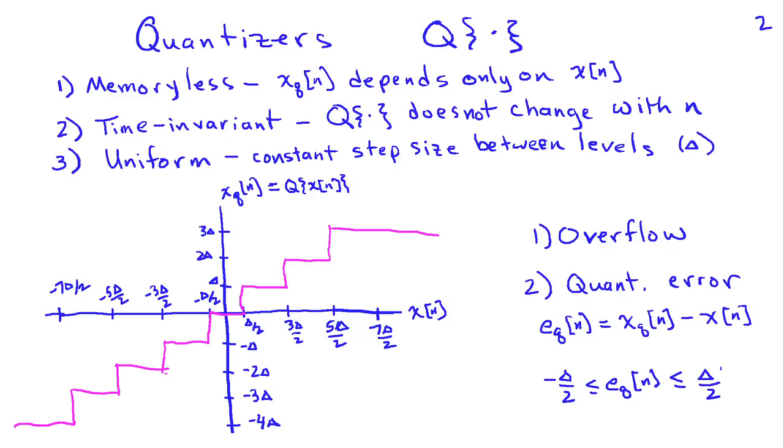Now it turns out that this introduces two effects. One is that there's a possibility of overflow, because the value x of n on the input side exceeds the maximum that we can represent on the output side. That can be dealt with by properly scaling your input signal, and it's something we're not going to talk about much more.